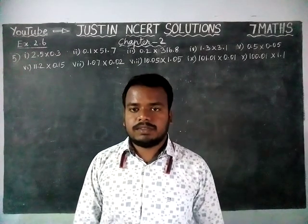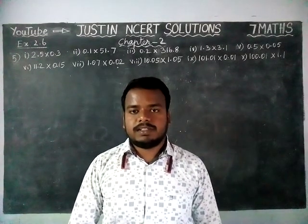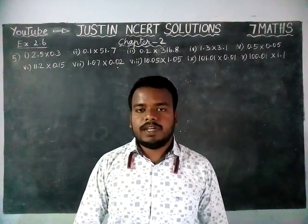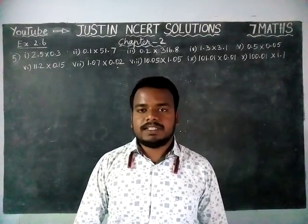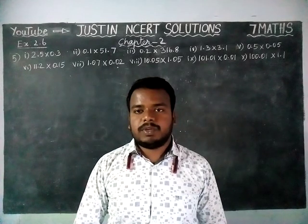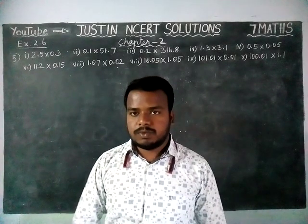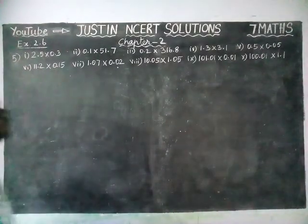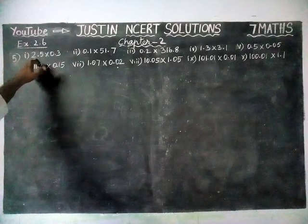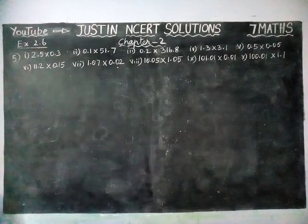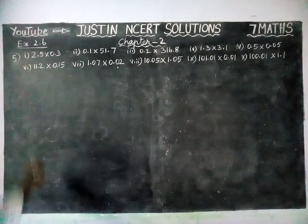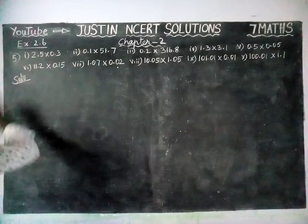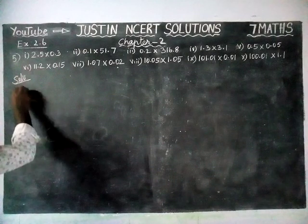Hi students, welcome to Justine's NCRD Solutions. In this video, we are going to see Grade 7 Maths, Chapter 2, Exercise 2.6, 5th question. Here we are going to multiply a decimal number by another decimal number. Totally 10 sums are there. We will solve one by one.